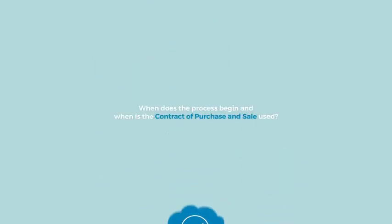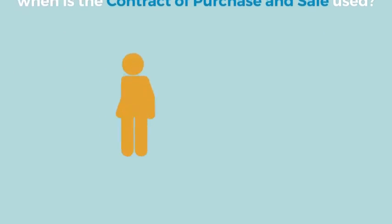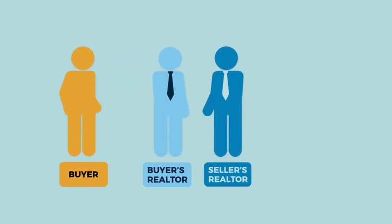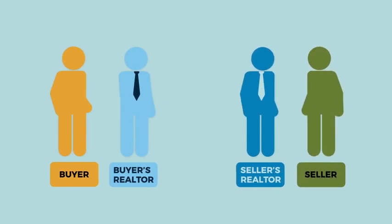When does the process begin and when is the Contract of Purchase and Sale used? The process begins with negotiation of the contract terms, which typically starts when a buyer makes an offer to the seller to purchase the property. Usually, the buyer's realtor prepares an offer on behalf of the buyer using the Contract of Purchase and Sale, and once signed by the buyer, it is presented to the seller.